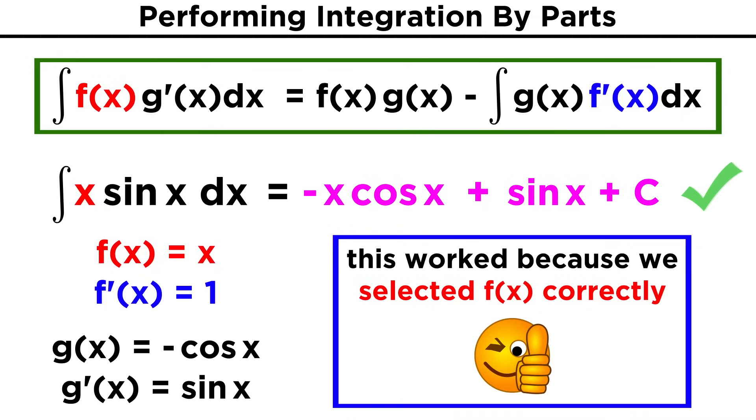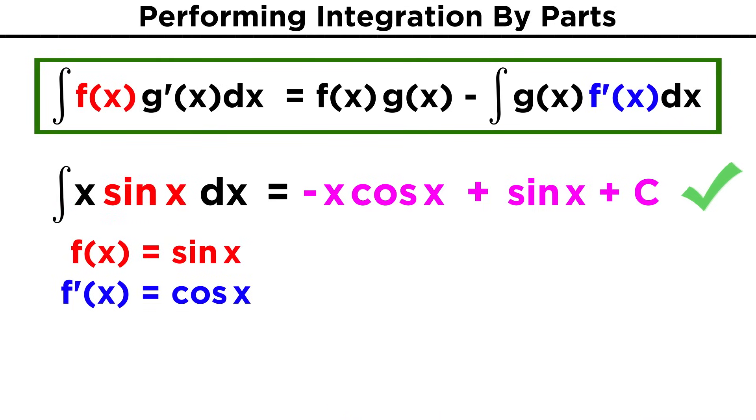In this case, that was x, because its derivative is one. Choosing sin(x) would have been a bad idea, because its derivative is just another trig function, cosine, and the other integral wouldn't have been any easier to evaluate, so this method wouldn't work.